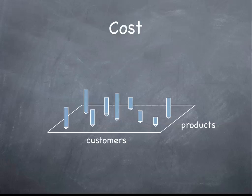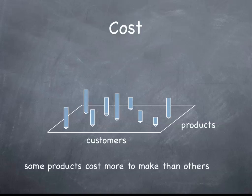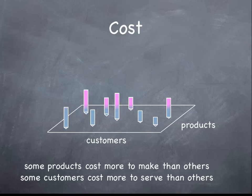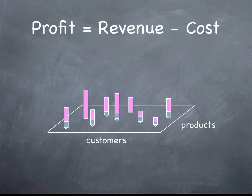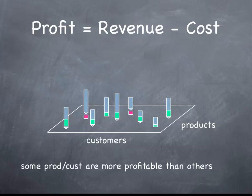On the cost side, clearly some products cost more to make than others, and some customers cost more to serve than others. So if we look at the profit, which is essentially revenue minus cost, we will see a very unique combination between customers and products.